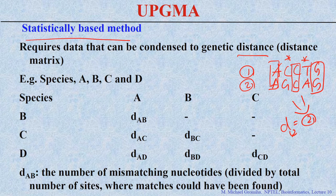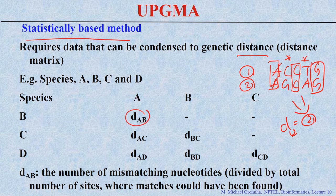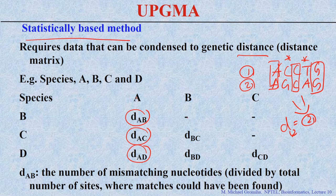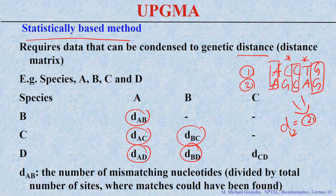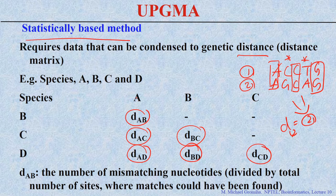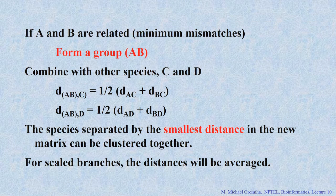For example, if we take species A, B, C, D, and E, we calculate the pairwise distances: D(A,B), D(A,C), D(A,D), and so on for all combinations. Among all possibilities, we count the number of mismatching sites. From this, which two species are closest to each other? The pair with the least number of mismatches.